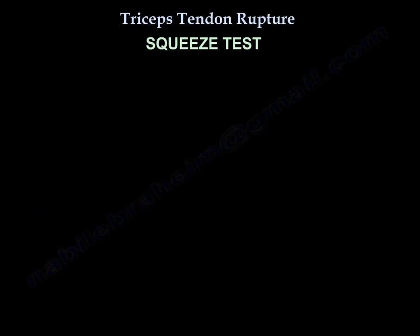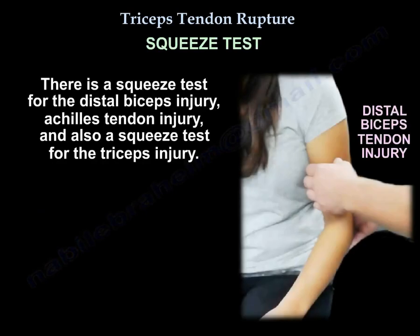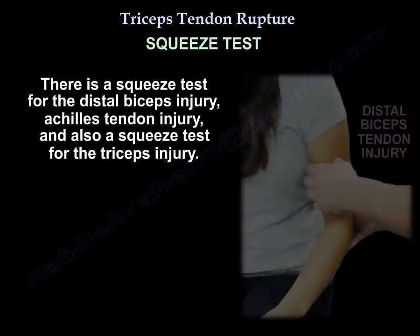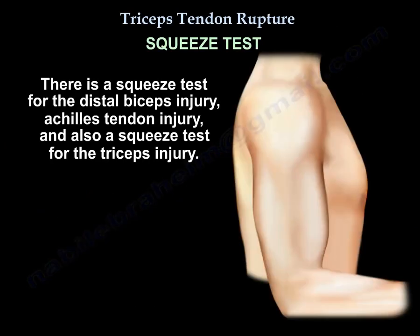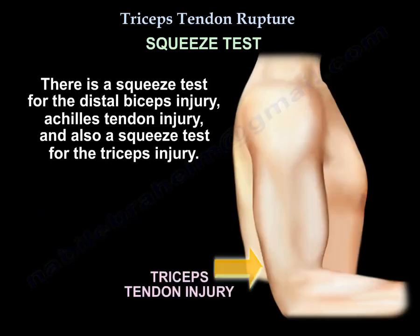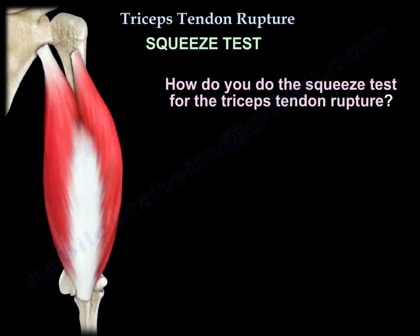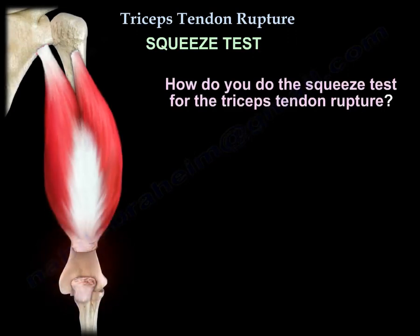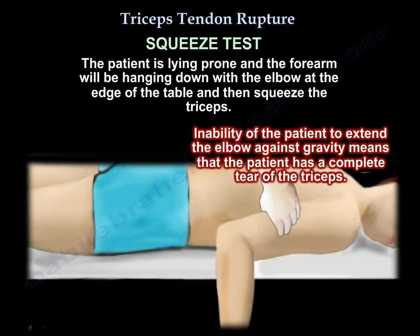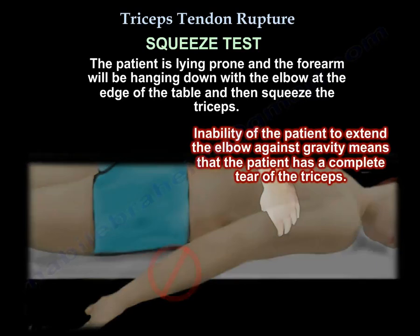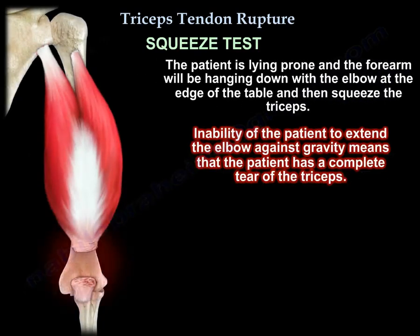There is a squeeze test for the distal biceps injury, a squeeze test for the Achilles tendon, and there is also a squeeze test for the triceps tendon injury. To perform the squeeze test for triceps tendon rupture, the patient lies prone with the forearm hanging down and the elbow at the edge of the table. You then squeeze the triceps. Inability of the patient to extend the elbow against gravity indicates a complete tear of the triceps.